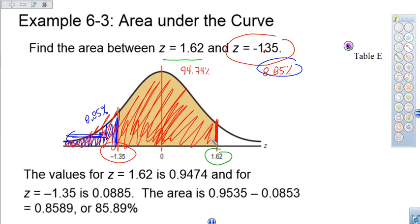Well, I don't want all of that area. I only want it to this spot. So if I take those two percentages, 94.74% and 8.85%, and subtract them, I come out with 85.89%.